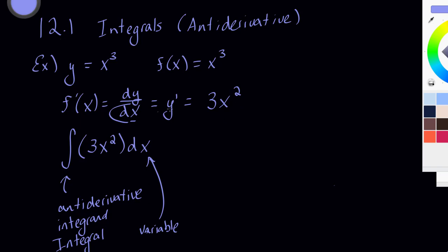So you can kind of think, if you multiply both sides of this by dx, you would have dy equals 3x squared dx.